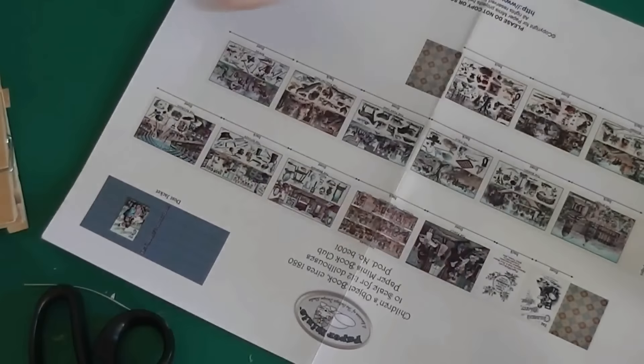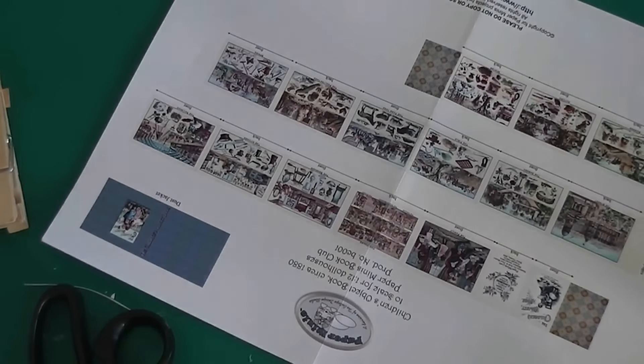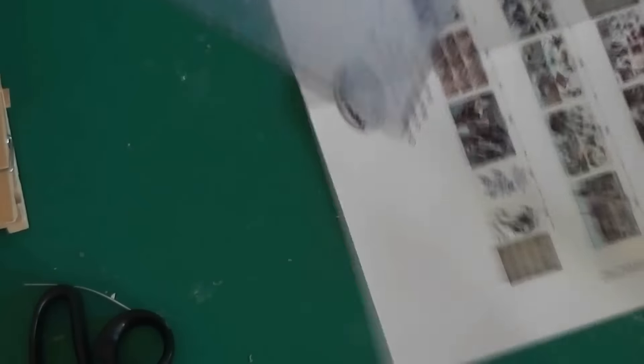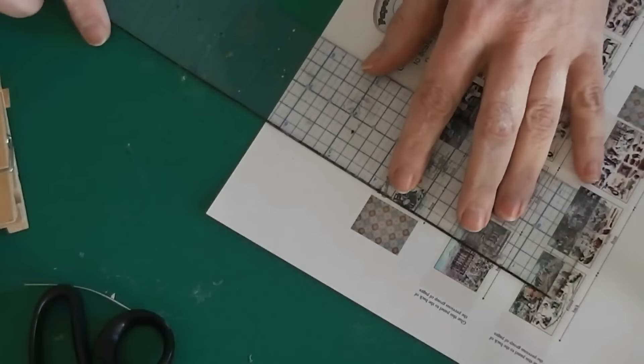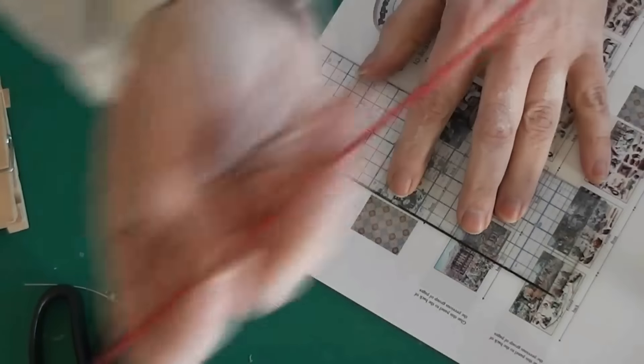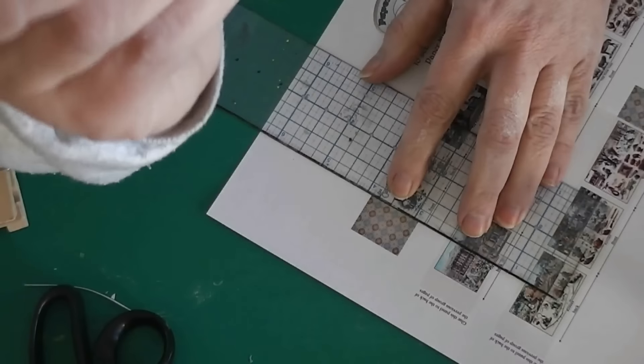So the first thing we are going to do, get this nice and flat. Now this is printed, so you're going to have to be very careful when you cut and when you score. And I think I am going to score before I cut. I simply find it easier.